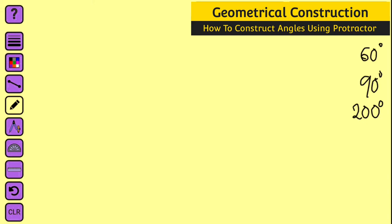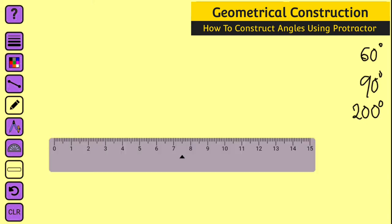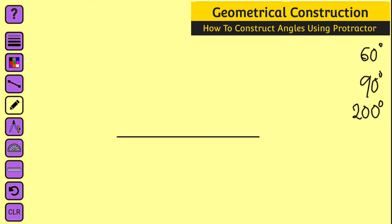So let us start with 60 degrees. The first thing we need to do here is to draw a straight line, so let me bring my ruler to do that. This is a straight line. Let me label it as point A and point B. You may choose point A or point B to be your origin depending on the direction you wish to construct the angle.